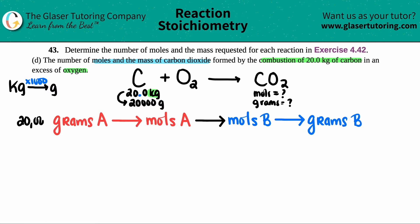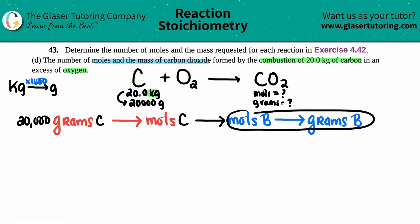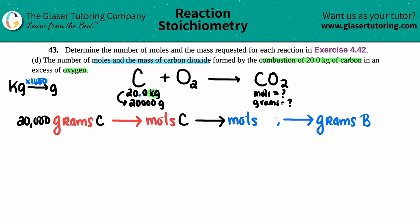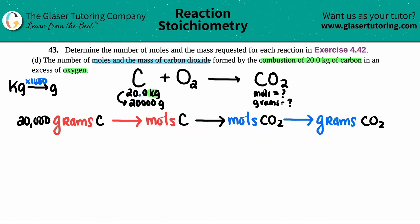Now I have 20,000 grams of C. Keeping with the schematic, I have to go from grams of carbon to moles of carbon, then cross over and go to moles of CO₂, and from there find grams of CO₂. That is my whole schematic — this is now just one big dimensional analysis. Let's go! You start with what you're given: 20,000 grams of C.